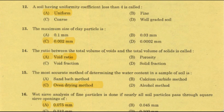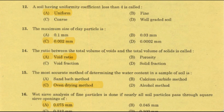Summary of uniformity coefficient classifications: Cu value is always greater than or equal to 1. Cu greater than or equal to 4 means well-graded gravel. Cu greater than or equal to 6 means well-graded sand. Cu less than 4 means poorly graded or uniformly graded. Cu equal to 1 means uniformly graded. Cu of 2 or 3 means poorly graded — example: beach sand. So the correct answer for a Cu less than 4 is called uniform.